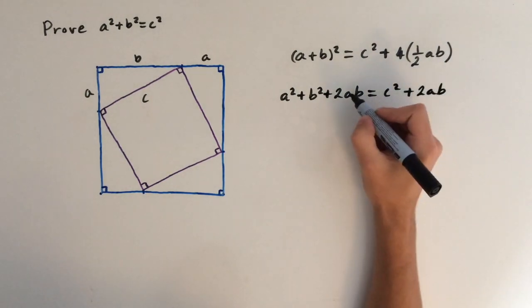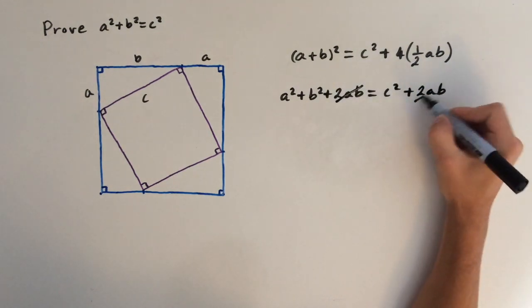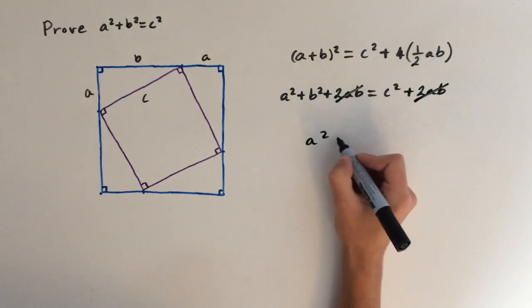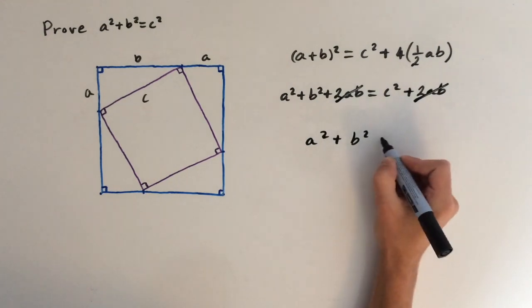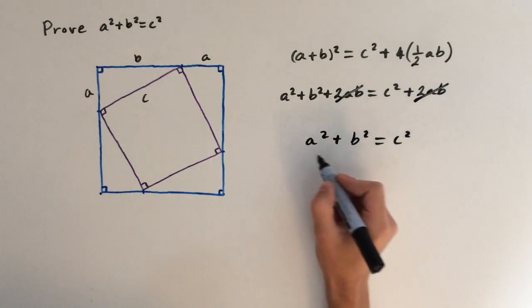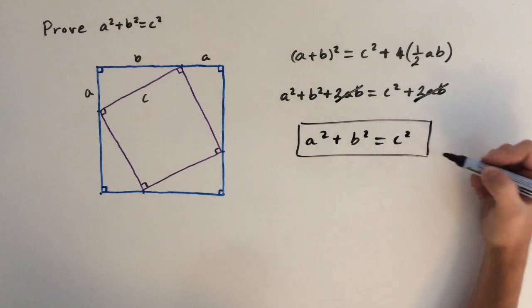And what do you notice? The two ABs cancel out. So we're left with A squared plus B squared equals C squared. How cool is that? We've proved the Pythagorean theorem in three lines.